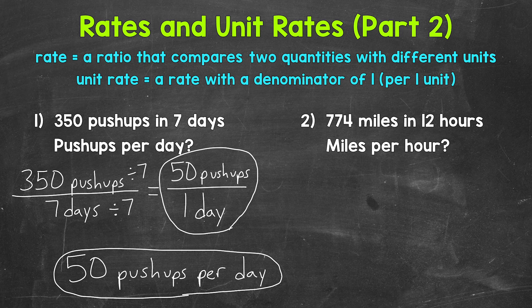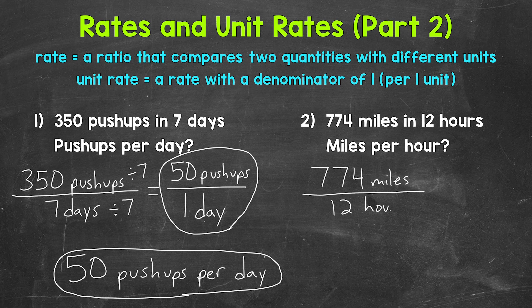Let's move on to number 2 where we have 774 miles in 12 hours. We have someone traveling 774 miles in 12 hours. Let's write that as a rate in fractional form: 774 miles over 12 hours. Now we need to find the unit rate — how many miles traveled per 1 hour?